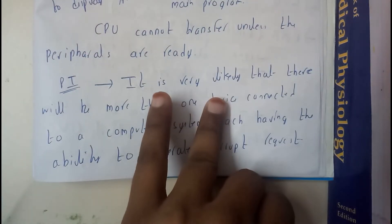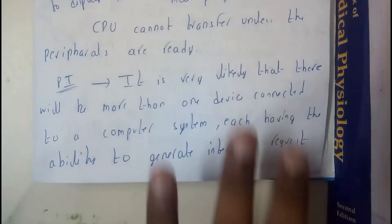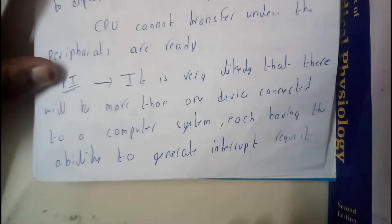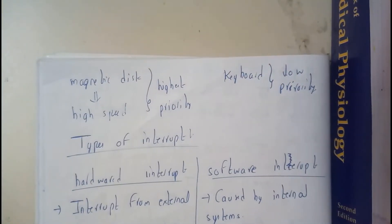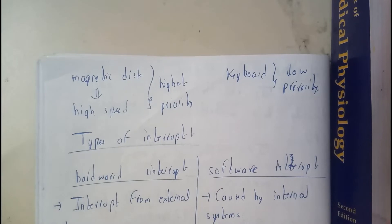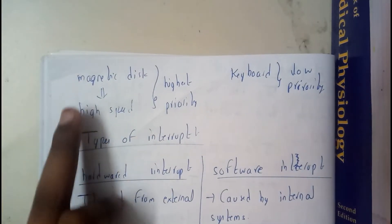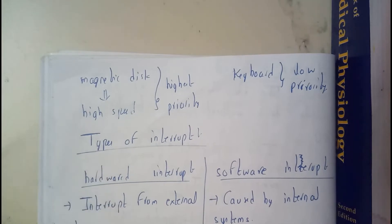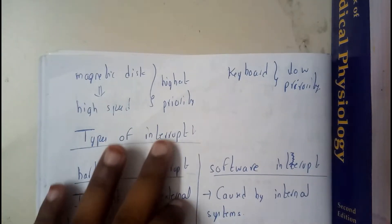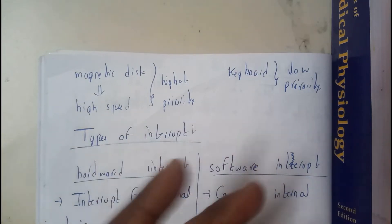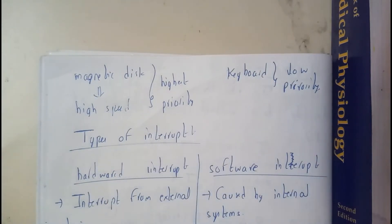For our system, we will be connecting USB drives, mouse, keyboard, pen drives, other hard drives whenever we need. Each and everything will be generating some kind of signals - those are nothing but interrupt signals. The priority will be in this format: for magnetic disk and high speed devices it will be having high priority, whereas keyboard, mouse and those low priority things will be having low priority.